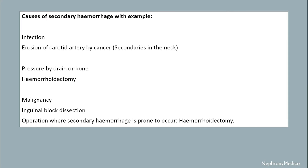Causes of secondary hemorrhage with examples: infection, as in erosion of the carotid artery by cancer; pressure by drain or bone, as in hemorrhoidectomy; malignancy, as in inguinal block dissection. The operation where secondary hemorrhage is prone to occur is hemorrhoidectomy.